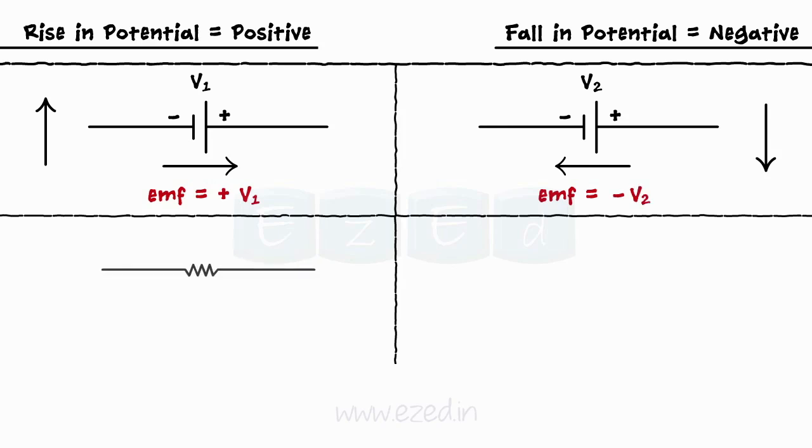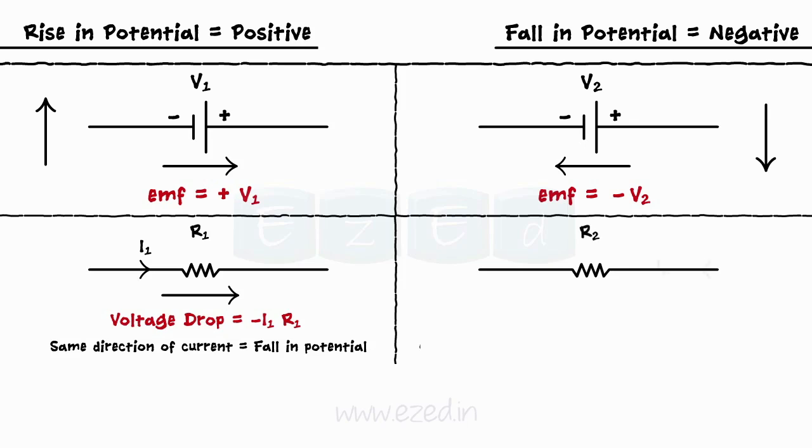Same conventions follow for the voltage drops also. If we go through the resistor in the same direction of current, there is a fall in the potential. So, the sign of the voltage drop is always negative. And if we go through the resistor in the opposite direction of the current flow, we get an increase in the potential. So, the sign of the voltage drop changes to positive in this case.